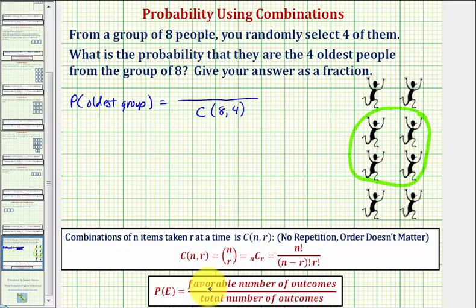And again, the numerator is going to be the favorable number of outcomes, or the favorable ways of selecting a group of four that contains the four oldest people from the larger group. And since all the groups are unique, there's only one group that would contain the four oldest people.